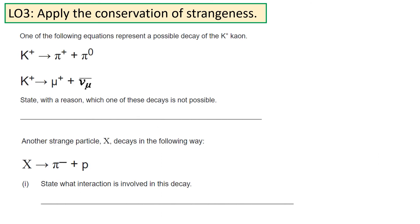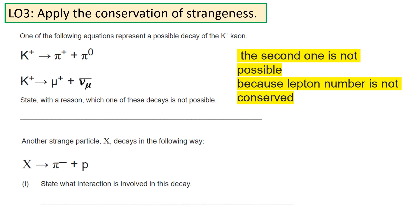Here's another question for you to have a go at — pause the video and jot down the answers to these three questions. The second interaction is the one that is not possible; the reason for this is because the lepton number would not be conserved.